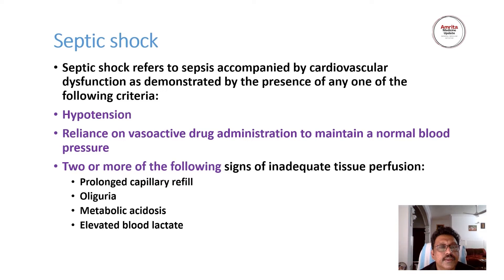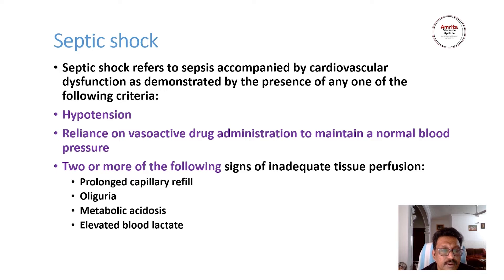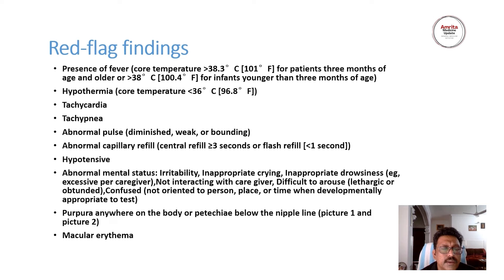In septic shock, hypotension is present. Depending on the hypotension, we start fluids or vasopressors. The patient requires vasoactive drugs like vasopressors to maintain normal BP, along with two or more of the following: prolonged capillary refilling time, oliguria, metabolic acidosis, elevated blood lactate. These are the diagnostic criteria for septic shock. Whatever it is, a patient having shock due to an infection requiring vasopressors to maintain mean arterial pressure more than 65 mmHg is the diagnostic criterion for septic shock.